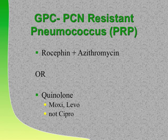Why did a sub-analysis show that patients on Rocephin plus azithromycin did better than Rocephin alone, even for Strep pneumo? Because azithromycin has immune-modulating factors—it's like giving prednisone; it modulates the immune system. That's why it helps. It's even used for BOOP—bronchiolitis obliterans with organizing pneumonia.